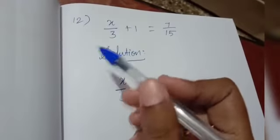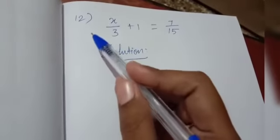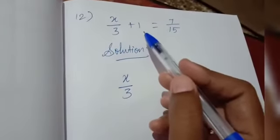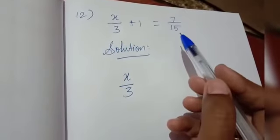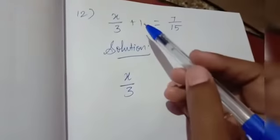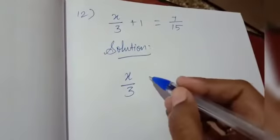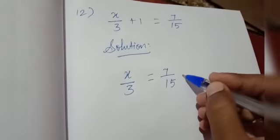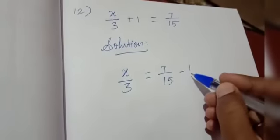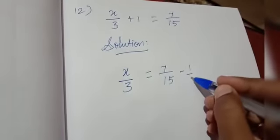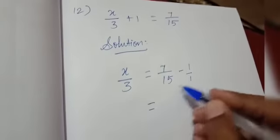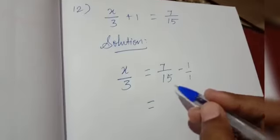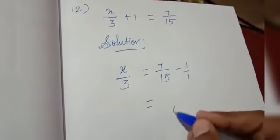One more sum I will explain from the same exercise — this is the 12th sum. The question is x by 3 plus 1 is equal to 7 by 15. Here, first we have to bring plus 1 to the right side. That is equal to 7 by 15, and plus 1 becomes minus 1. We cannot subtract directly because different denominators are there, so we have to take LCM. The LCM for 15 and 1 is 15.